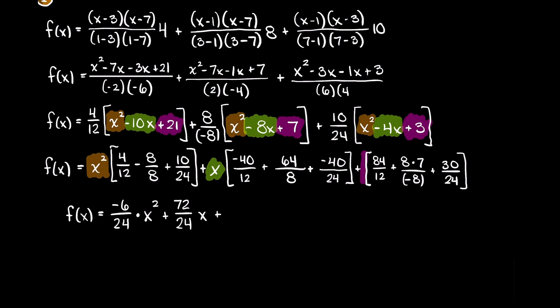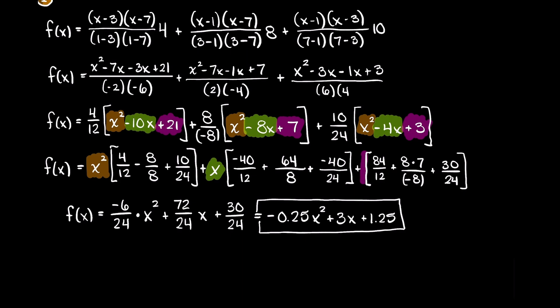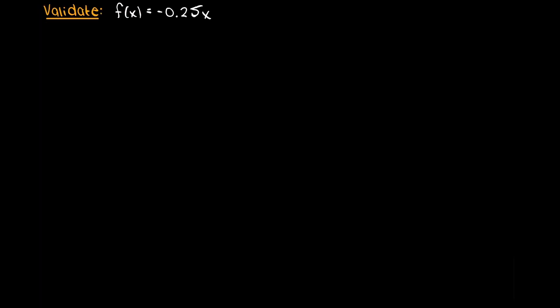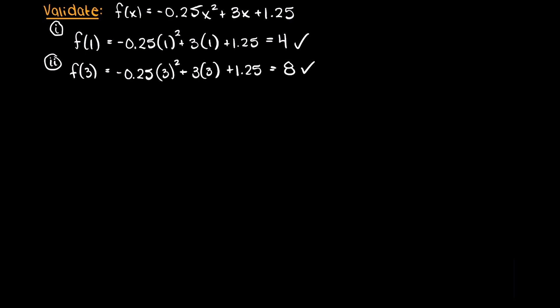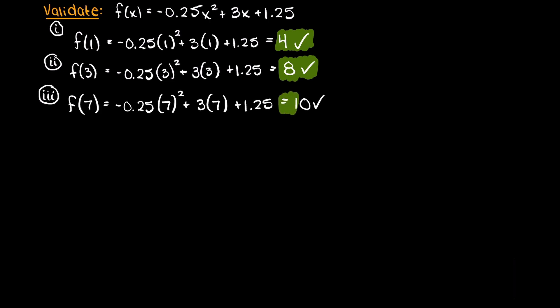Now I am just going to simplify the coefficient terms. As these are rational fractions, I am going to convert them to decimals, and this is our interpolated Lagrange function: minus 0.25x squared plus 3x plus 1.25. Now if you want, you can do a quick check by plugging our x terms into our Lagrange polynomial. Remember, when developing these interpolating functions, it needs to pass through every given data point. Therefore, by plugging in our x terms, we should get our y term back. As you can see, we are returned our outputs as we expected.